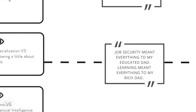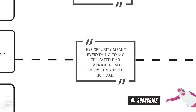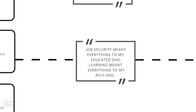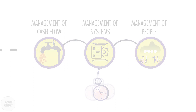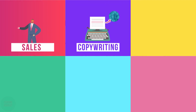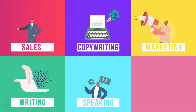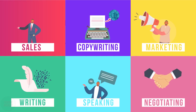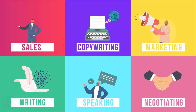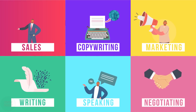Job security meant everything to my educated dad; learning meant everything to my rich dad. Poor dad wanted Robert to become highly specialized and focus on job security. Rich dad wanted Robert to know a little about a lot. The main skills to focus on are: management of cash flow and how to deploy capital, management of systems, how to plan and allocate your time efficiently, and management of people — how to hire and motivate a team. The main specialty skills Robert recommends are sales, copywriting, and marketing. The main communication skills are writing, speaking, and negotiating. Robert considers working for different companies a wise decision, as you will learn more and from the long-view perspective, this will pay dividends.